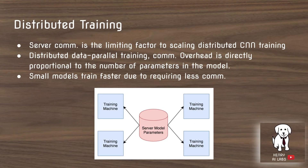Distributed training is the most popular way to train deep neural networks, especially when training on enormous datasets or enormous models. They make the argument for using distributed training even with small models. Distributed training, also commonly referred to as distributed synchronous or asynchronous stochastic gradient descent, involves a server that holds the model parameters and distributes them to machines to run a stochastic gradient descent training batch update.